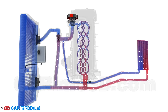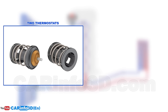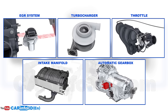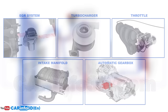There are other, more complicated layouts. They may contain two thermostats, electronically controlled thermostats, as well as more complex cooling circuits that keep the EGR system, turbocharger, throttle, intake manifold, and automatic gearbox oil at the appropriate temperature. It should also be mentioned that the system employs a special coolant with specific chemical features, such as anti-corrosion, anti-cavitation, or non-freezing properties. This concludes our review.